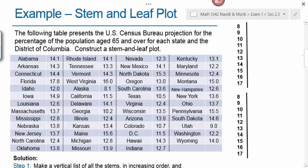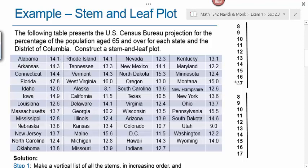In this example we're going to construct a stem and leaf plot. The following table presents the US Census Bureau projection for the percentage of population age 65 and over for each state and the District of Columbia. Everything to the left of the decimal will be the stem, and the digit to the right of the decimal will be the leaf. I've listed all the stems we'll need, and now we fill in the leaves.